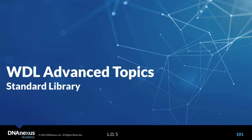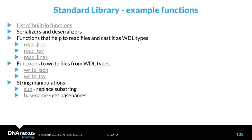In tasks, we can use a command section in Bash or Python, and we can also use standard library built-in functions in WDL. We didn't list every function but we highlight the ones we use. There are functions to read files — readJson, CSV, or lines — and functions to write files — writeJson, writeCSV.